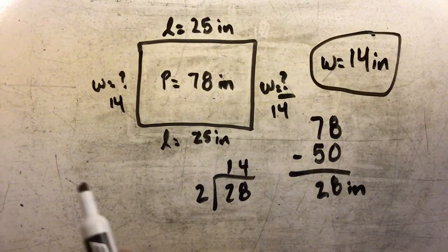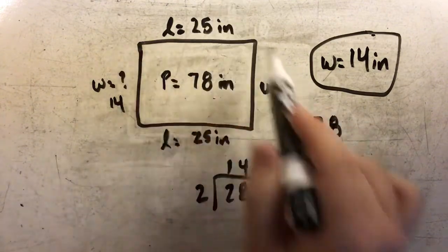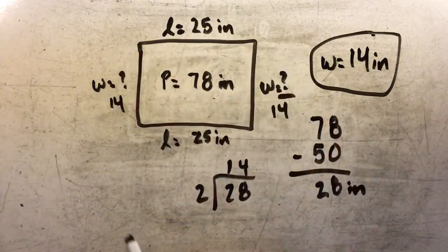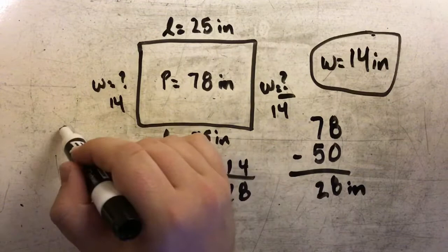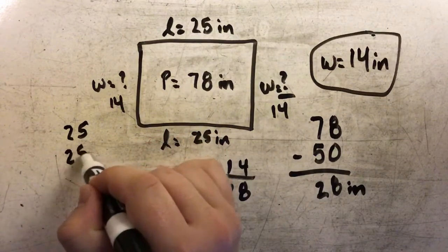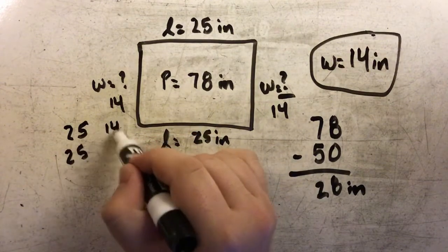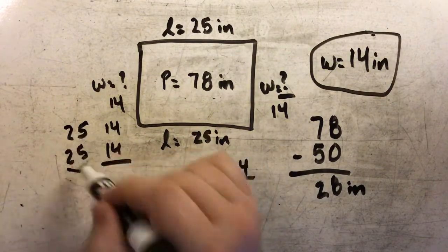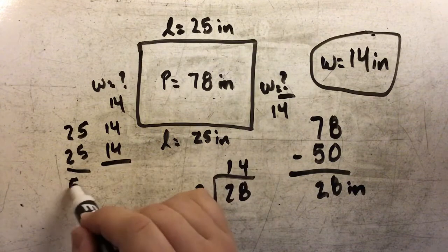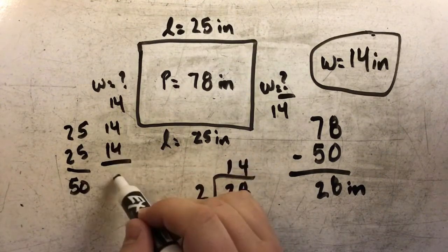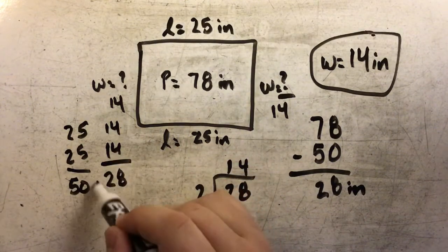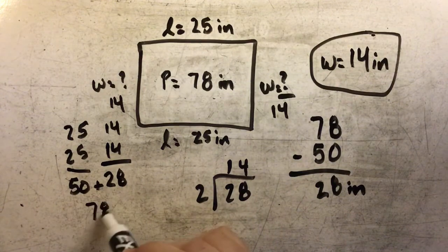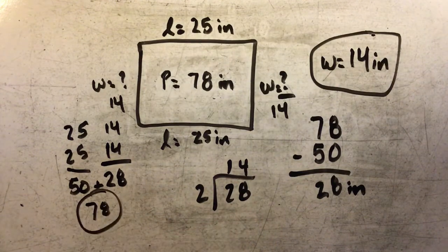Now if I wanted to check that, all I'd have to do is re-add all of these together to see that they equal 78. 25 plus 25 is 50, and 14 plus 14 is 28. And when I add those together, I still end up with my perimeter of 78 inches.